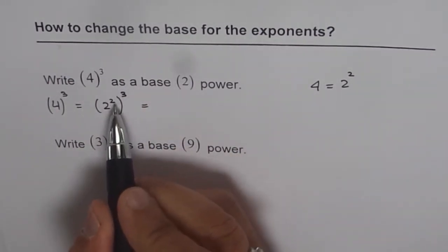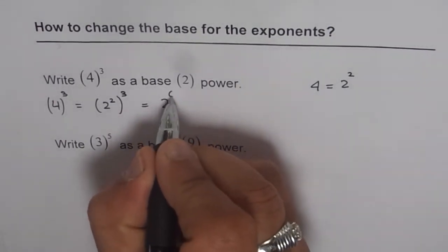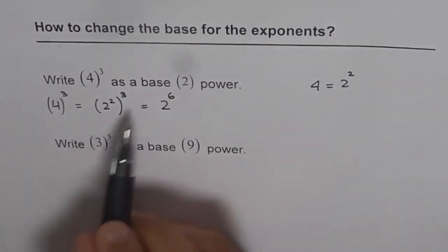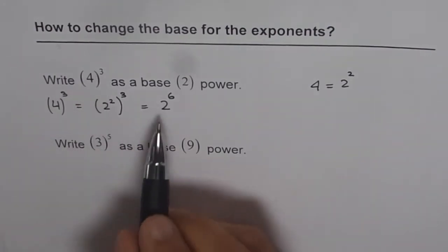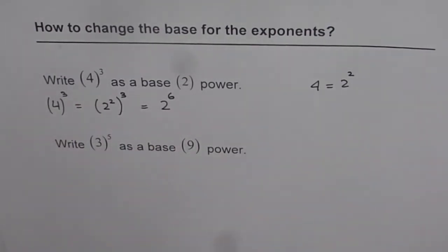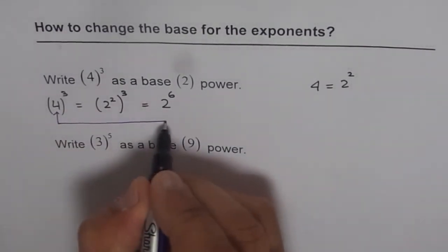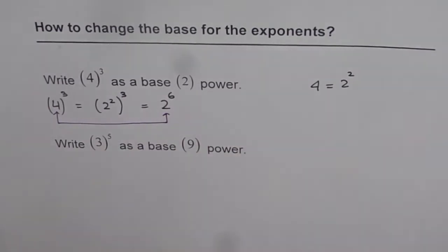Now, applying the laws of exponents, 2 and 3 should get multiplied. So we get 2 to the power of 6. And therefore, 4 to the power of 3 is equal to 2 to the power of 6. By doing so, we have changed the base from 4 to 2. Do you see that? Here the base is 4 and then we have base of 2. So this is the technique of changing the base.